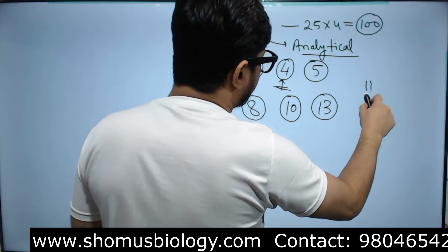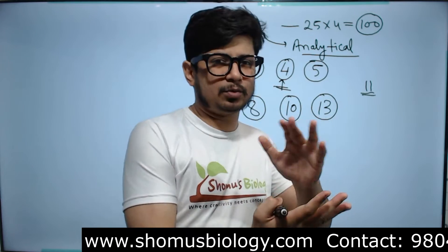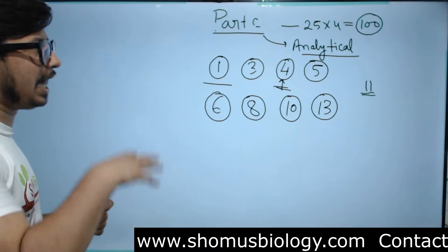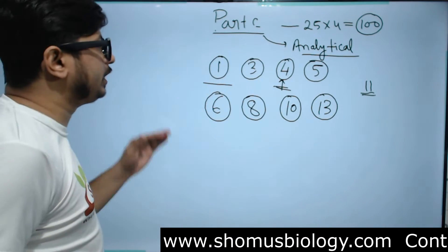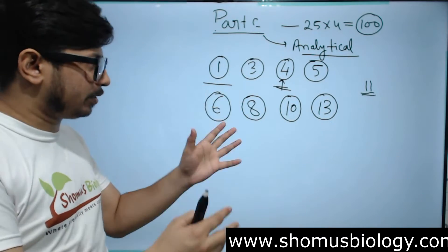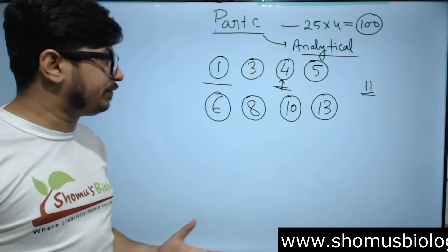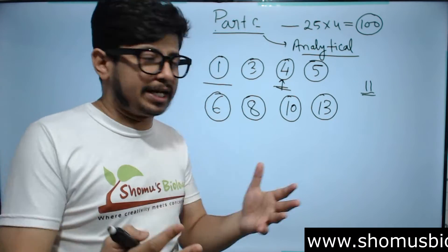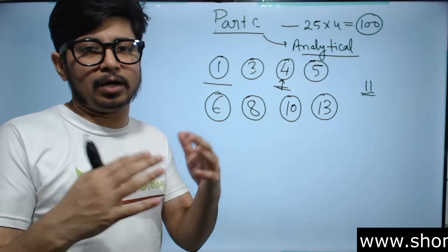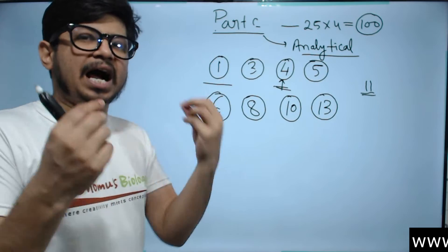There are questions also from Unit 11, but Unit 11 is neither that much biased towards Part B nor towards Part C. But these are the units that are biased: Unit 1 Biochemistry, Unit 3 Molecular Biology, Unit 4 Cancer Biology, Immunology, Cell Signaling, Microbiology, Unit 5 Developmental Biology, Unit 6 Plant Physiology, Unit 8 Genetics, Unit 10 Ecology and Environment Biology, Unit 13 Biological Techniques. All these eight units are very very important for Part C.